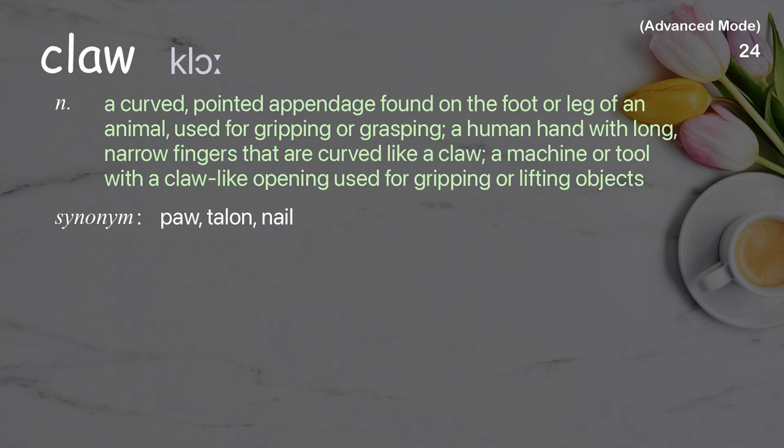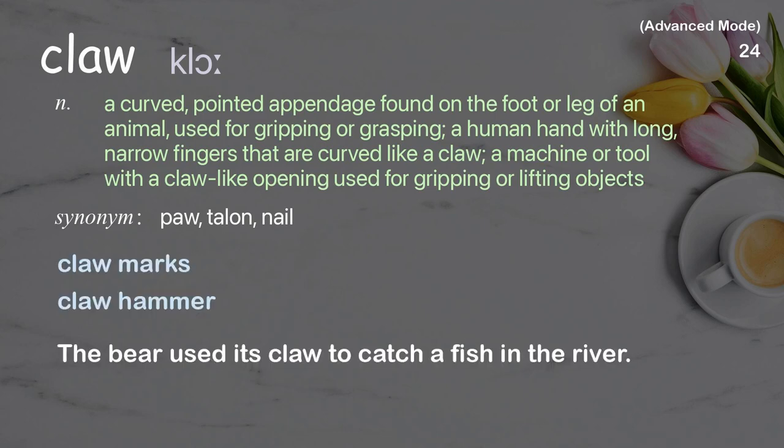Claw: a curved, pointed appendage found on the foot or leg of an animal, used for gripping or grasping; also a human hand with long, narrow, curved fingers; or a machine tool with a claw-like opening for gripping or lifting. Examples: claw marks, claw hammer. The bear used its claw to catch a fish in the river.